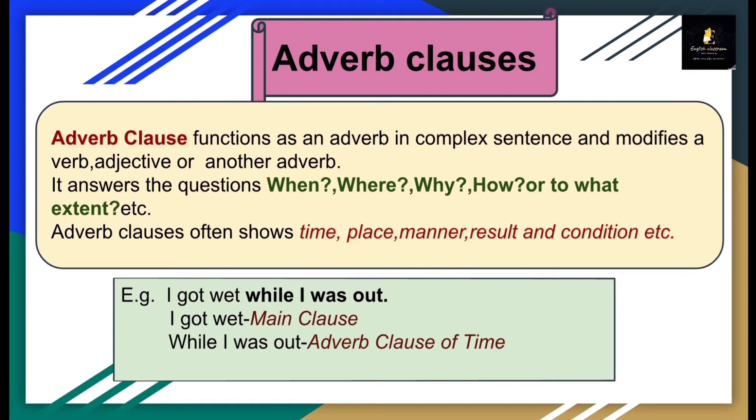Adverb clauses often show time, place, manner, result, and condition. For example: 'I got wet while I was out.' 'I got wet' is your main clause. 'While I was out' is your subordinate clause. 'While' is your subordinating word. When I ask 'when did I get wet?', the answer is 'while I was out', showing time. So this is an example of adverb clause of time.